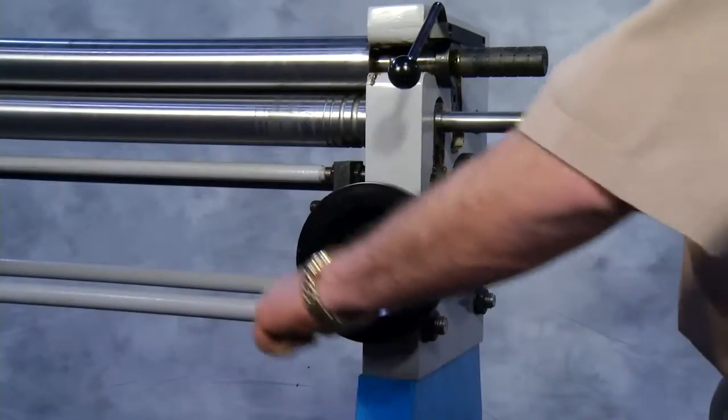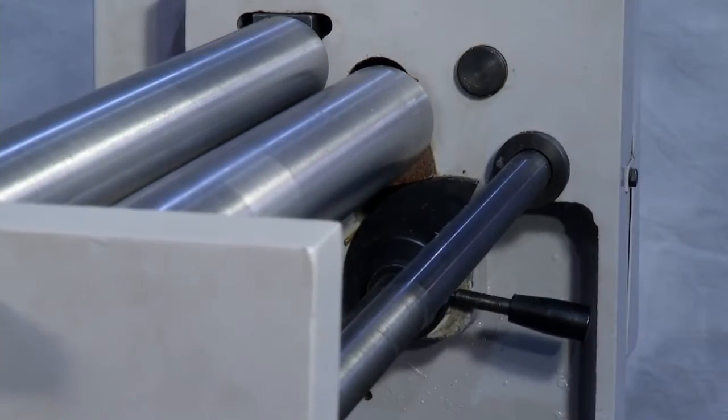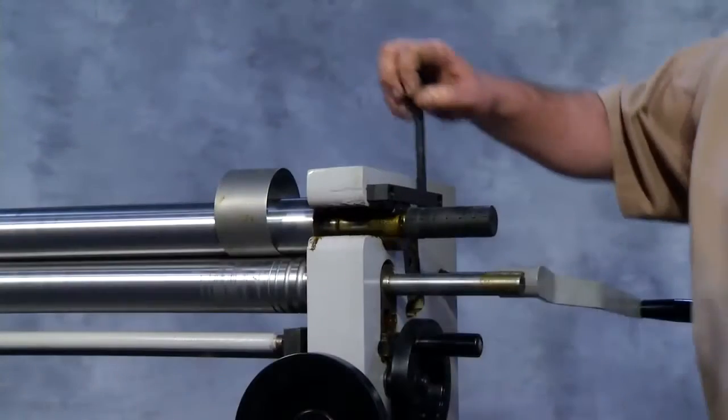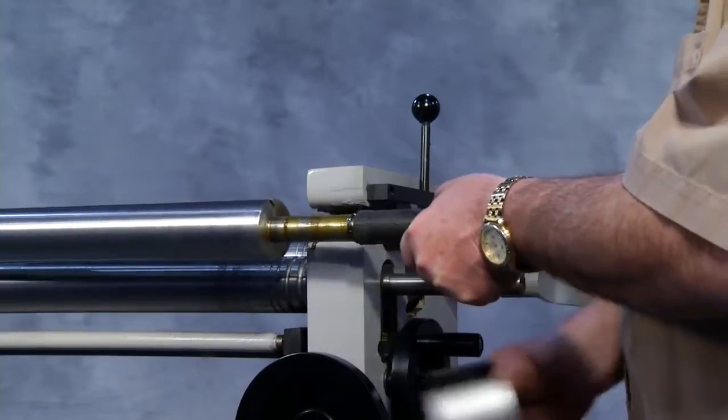A single-handle adjustment moves the back roll evenly up and down to achieve a consistent roll on a long part. A quick turn of a handle will also release the top roll for easy removal of the part.